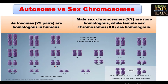In human beings we have 22 pairs of homologous autosomes. Males are heterogametic, containing X and Y chromosomes, which are non-homologous, while females have two X chromosomes. In a karyotype of a normal human, the homologous chromosomes look exactly alike. On the 23rd pair, females have two X chromosomes — homologous due to similar structure and size — while males have one X and one smaller Y chromosome.